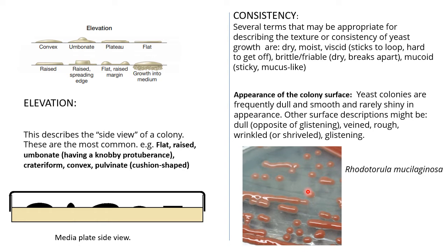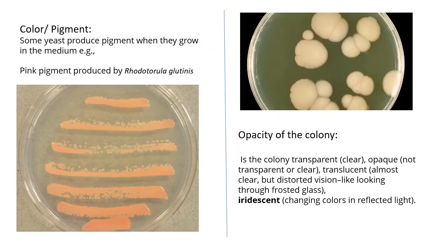About color or pigment: some yeasts produce pigments when grown in medium. For example, pink pigment production is seen in Rhodotorula glutinis. Many yeast cultures are used for pigment production and extraction, so they have industrial applications. After pigment comes opacity — whether light can pass through the colony or not.